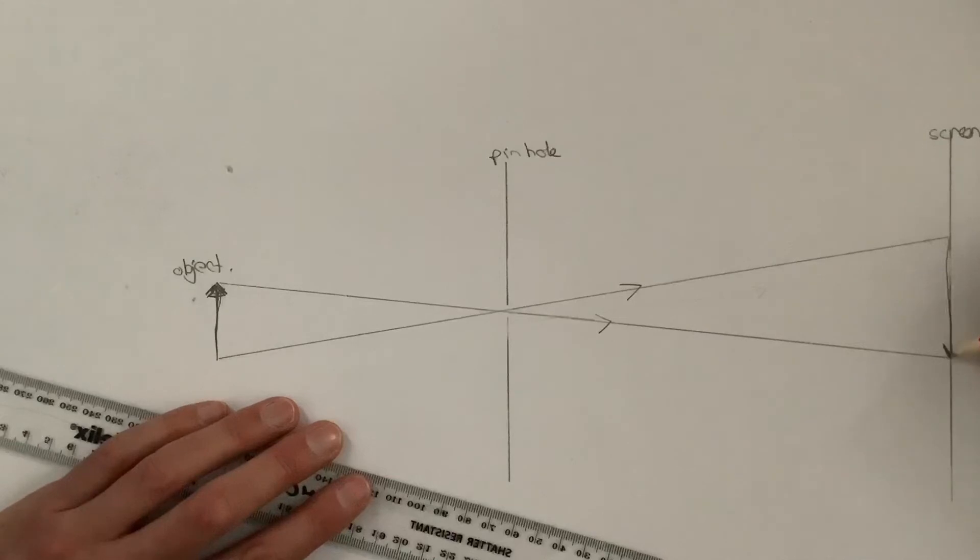And now we can work out that this must be the bottom of the object, this must be the top of the object. So we must have an arrow pointing down, which is our image.